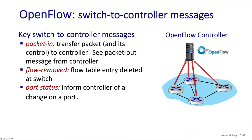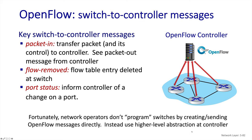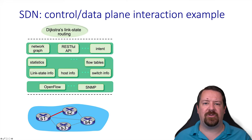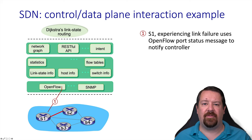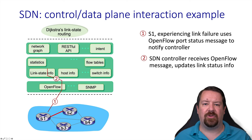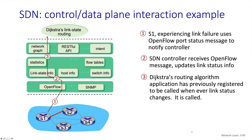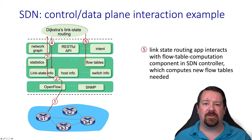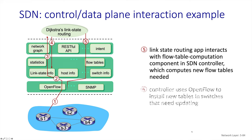One can envision this information being used by the controller to do something along the lines of link state routing. Of course, operators don't send or receive these messages directly, but rely on the abstractions provided by the controller. Let's follow an example interaction: in this case there's a link failure — the link between S1 and S2 is out. S1 notifies the controller of the change in its port status, the link state info at the controller is updated, which propagates up to the network graph abstraction, and Dijkstra's link state routing algorithm running as an application can compute new flow rules for S1, which are then propagated out to the routers.